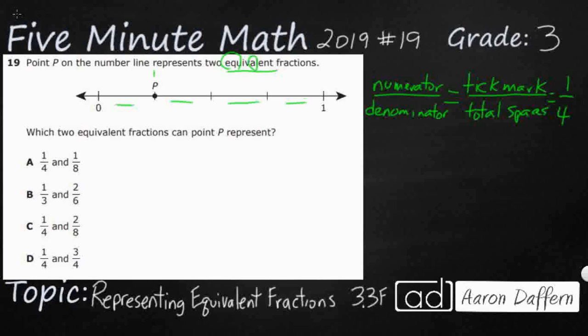So automatically we can go ahead and just get rid of B simply because it doesn't have one fourth. What we need now is to find what else is equal to one fourth. There's another one we can immediately get rid of, and this is going to be A. Take a look at this: one fourth and one eighth. Remember they need to be equal.